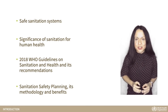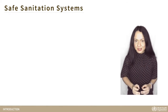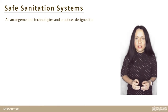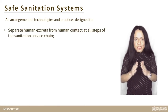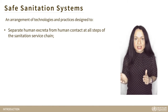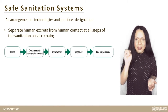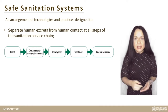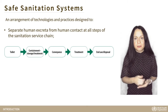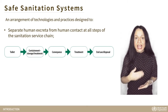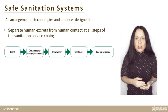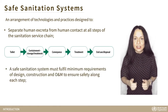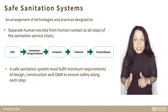Let's start with the definition of safe sanitation systems. Safe sanitation systems are an arrangement of technologies and practices designed and used to separate human excreta from human contact at all steps of the sanitation service chain — from toilet, containment, storage, treatment, conveyance, treatment, and end use or disposal. To be safe, a sanitation system must fulfill minimal requirements of design, construction, operation and maintenance at each step.